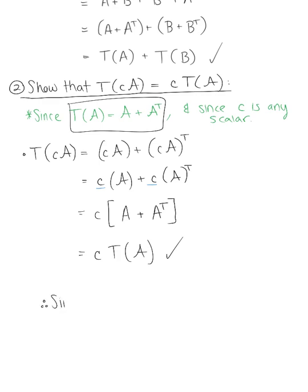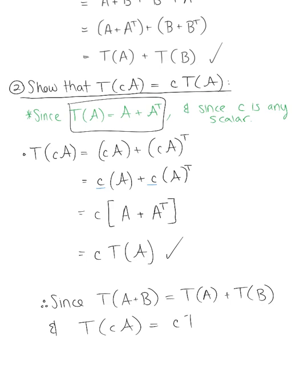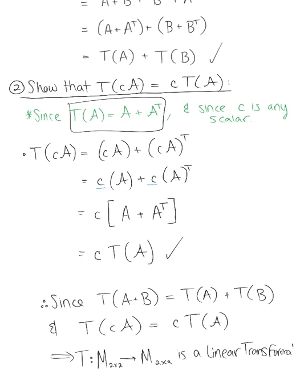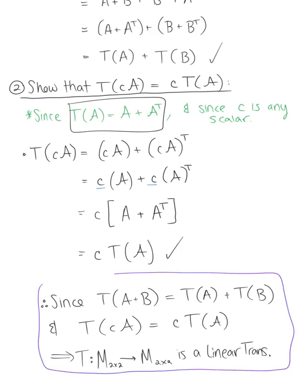Our final conclusion: since T(A + B) = T(A) + T(B), and since T(cA) = c·T(A), we can conclude that the transformation from M₂ₓ₂ to M₂ₓ₂ is, in fact, a linear transformation. This is our answer to Part A.